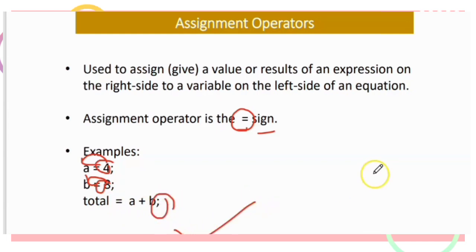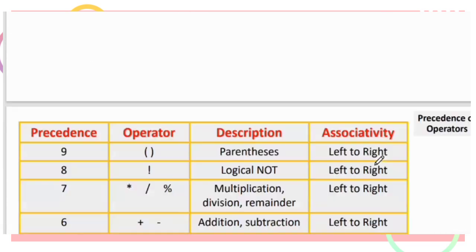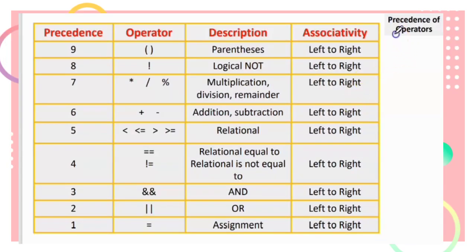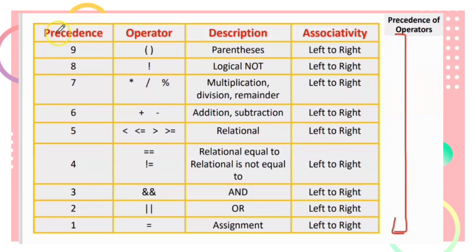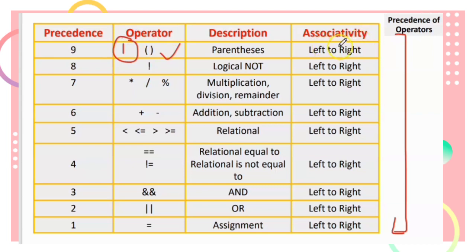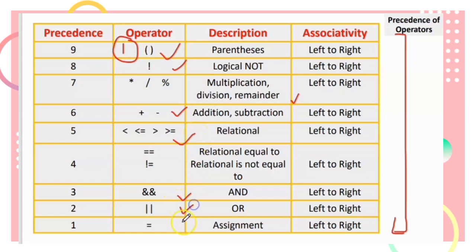Make sure when you see parentheses, you evaluate those first. For associativity, start from left to right, then logical NOT, then multiplication, division, and remainder, then addition and subtraction, then relational operators, and finally logical operators.